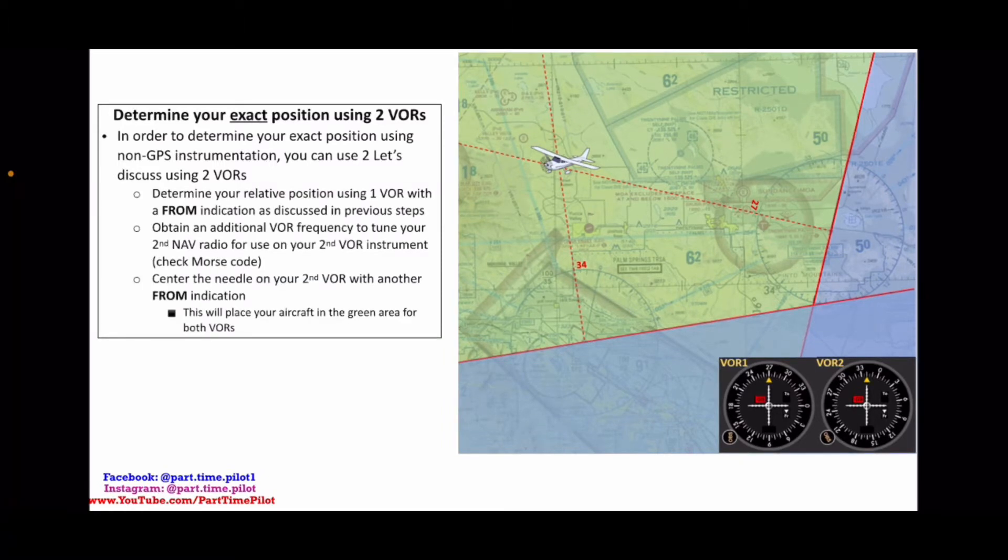So first, determine your relative position using one VOR with a from indication. So that means you're on the side of the radial for that VOR as discussed in the other video. Again, if you haven't watched that, go check that out.